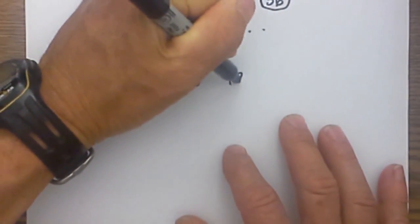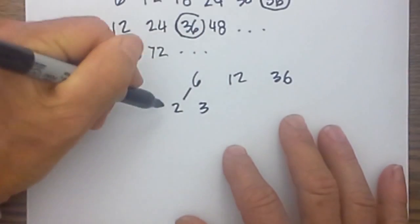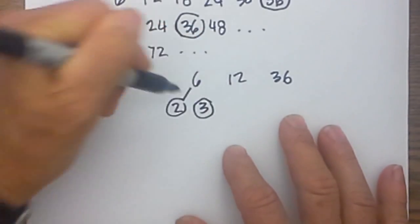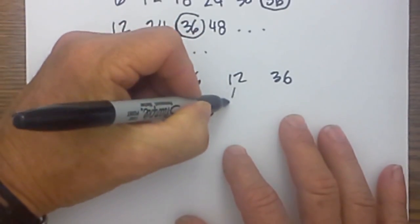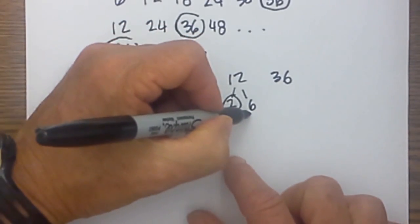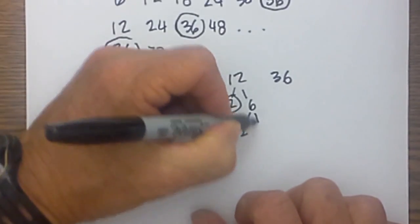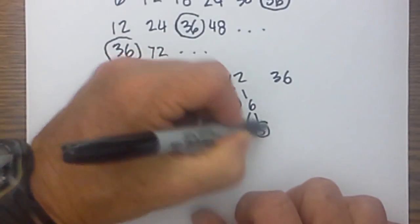So you have 6, 12, 36. 2 times 3 is 6, they are both primes so I will circle them. 2 times 6, circle the 2 because it is prime but it is not done yet because we have 2 times 3, I will circle them.